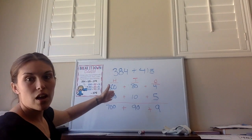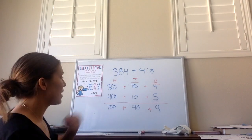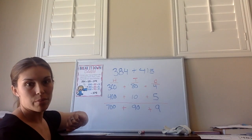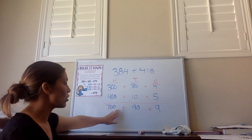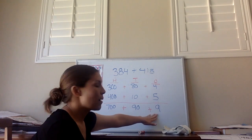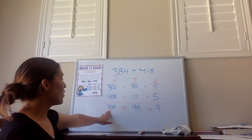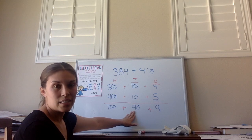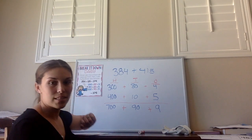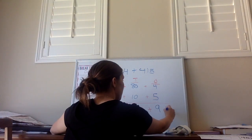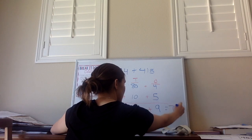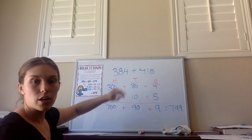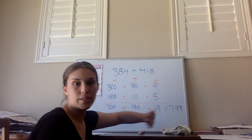So once I've added the hundreds, the tens, and the ones, my next job is to add all these values together at the bottom to get the final answer. So I'm going to add 700 plus 90 plus 9. 700 plus 90 is 790, and 790 plus 9 equals 799. So 384 plus 415 equals 799.